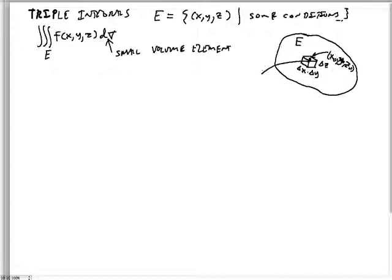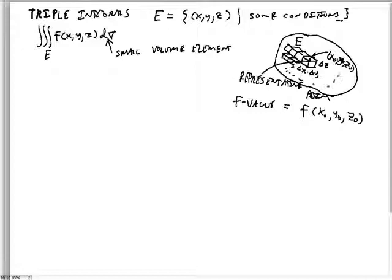And then we have a value associated with it. The F value is F of X0, Y0, Z0. And, of course, we just make more boxes in the space, like this. We essentially lay bricks inside all of the space, like that. And just keep going all throughout.